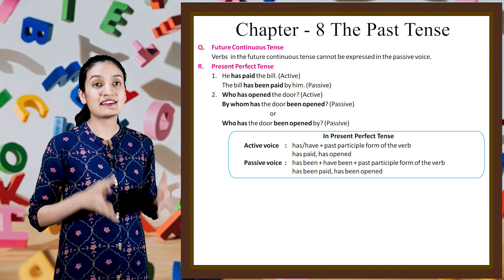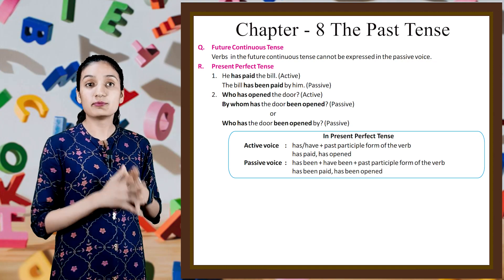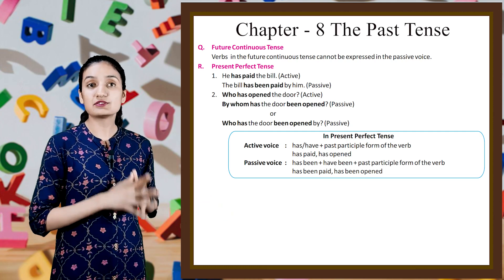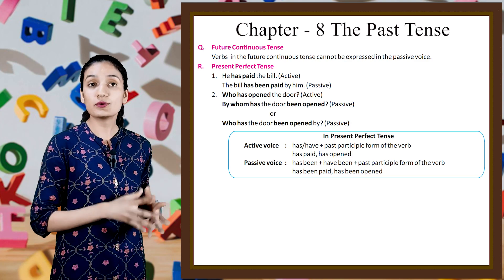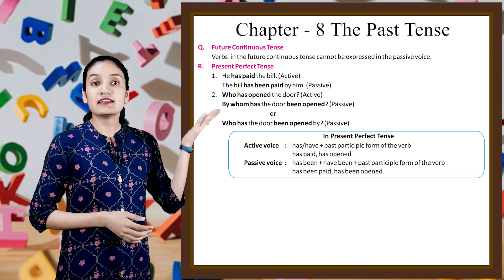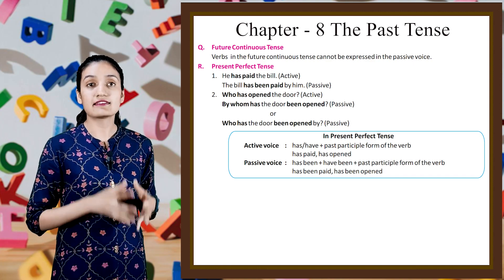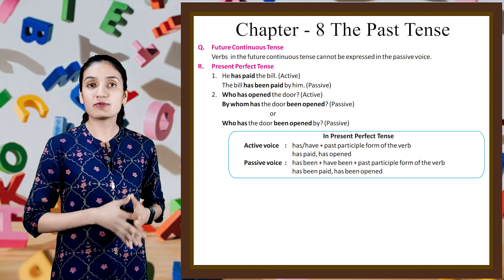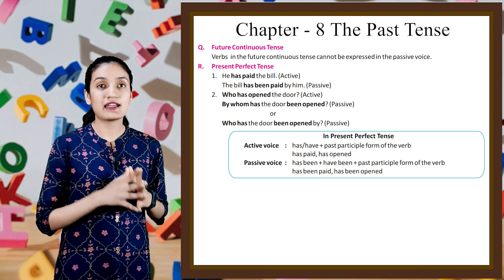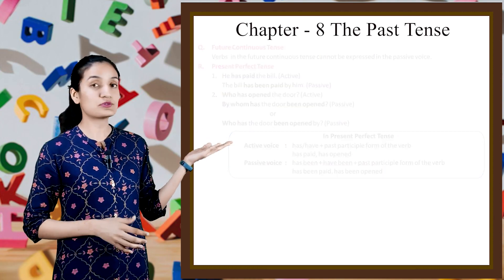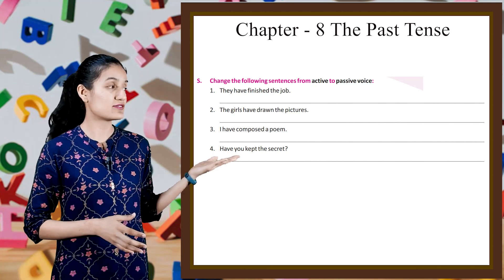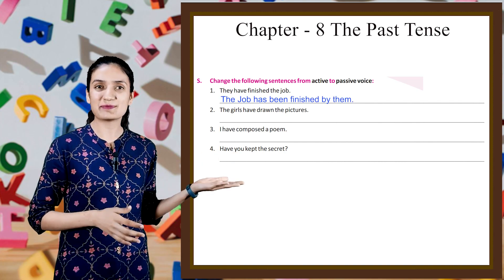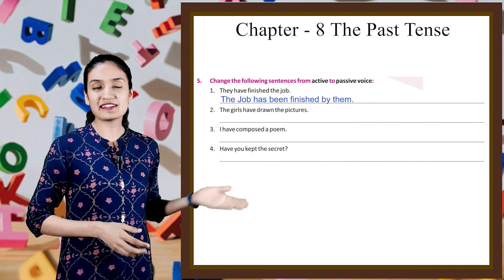Next is present perfect tense. 'He has paid the bill' (active) — 'The bill has been paid by him' (passive). 'Who has opened the door?' (active) — 'By whom has the door been opened?' (passive), or 'Who has the door been opened by?' (passive). In present perfect tense, active voice uses has/have plus past participle — has paid, has opened. Passive voice uses has been/have been plus past participle — has been paid, has been opened. Example: 'They have finished the job' becomes 'The job has been finished by them.' Do the rest sentences by yourselves.